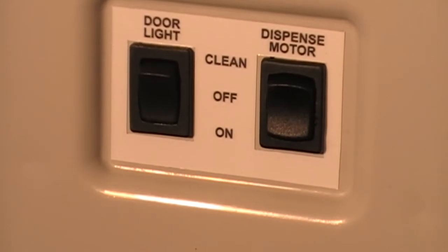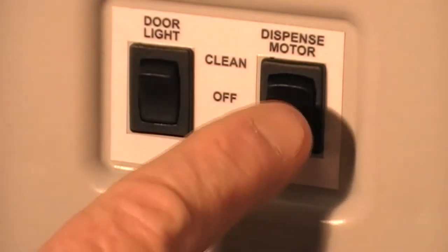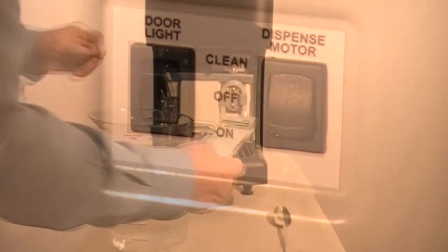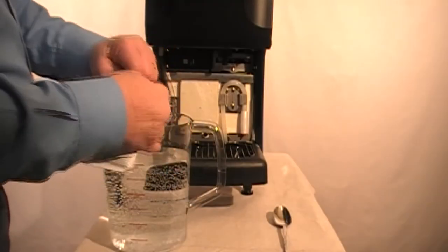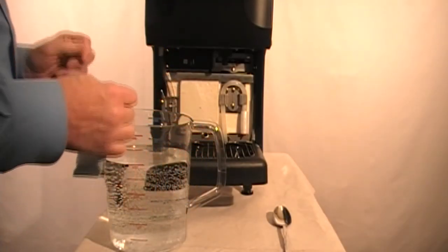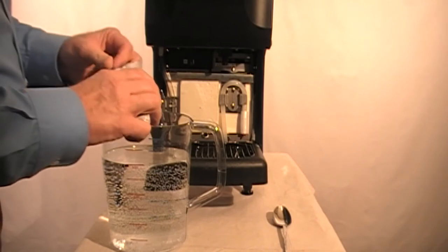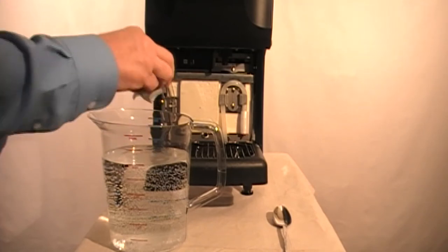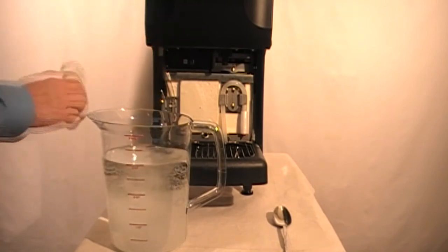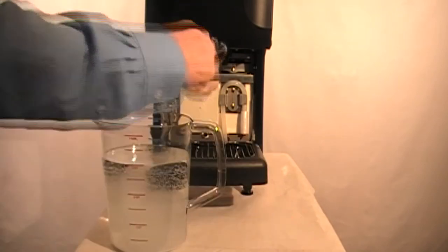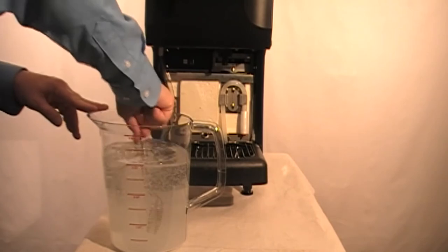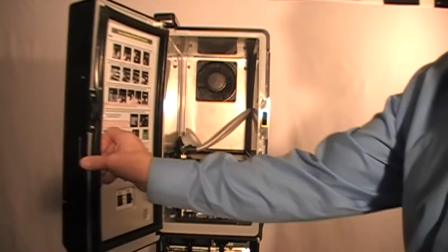Now locate the dispense motor switch on the inside door panel and place in the clean position. Prior to the initial use of the dispenser, the system will need to be sanitized. It is recommended to use a product such as K5 sanitizer or equivalent and follow the manufacturer's instructions to ensure 330 parts per million of available chlorine. After preparing the sanitizer,